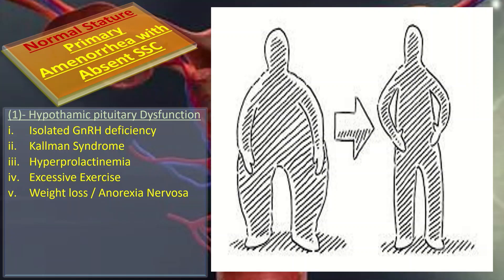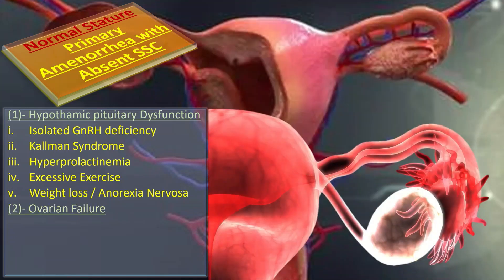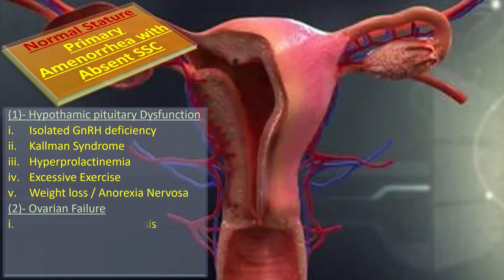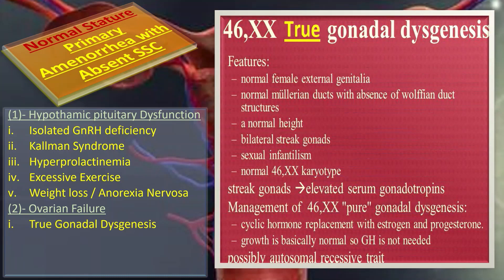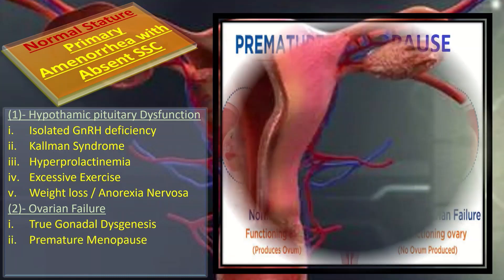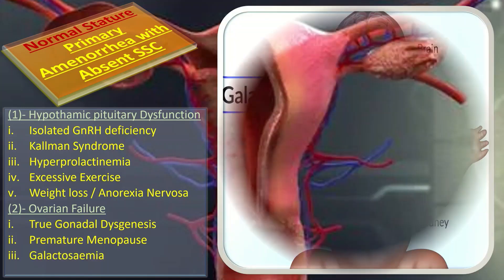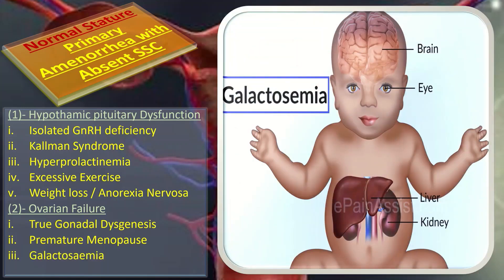The second subdivision is ovarian failure, which is hypergonadotrophic hypogonadism, and that includes true gonadal dysgenesis, premature menopause, and galactosemia. So far we have studied primary amenorrhea with absent secondary sexual characteristics and its two main subdivisions: short stature and normal stature.